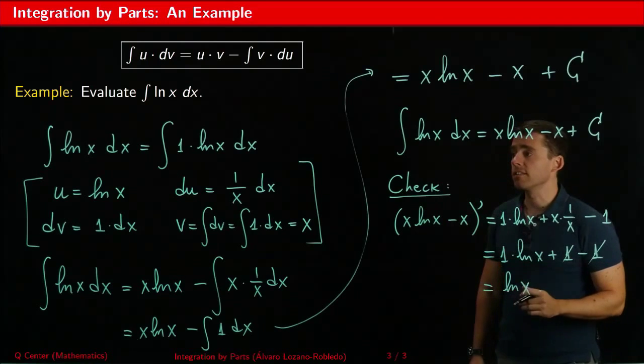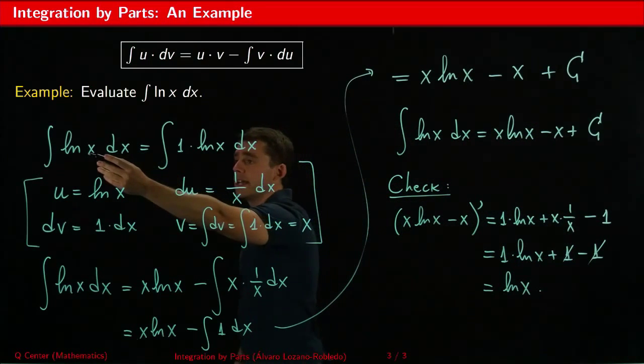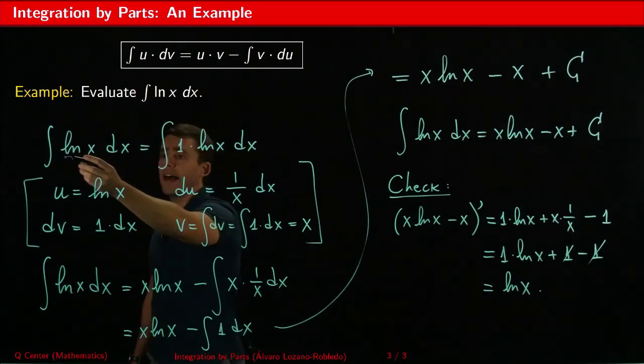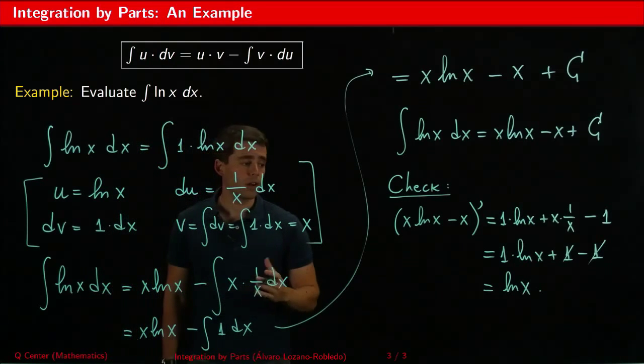So indeed that function x ln x minus x is an antiderivative of ln x. And again we've succeeded in using integration by parts for a function, for an integral that does not look immediately as a product of two functions. So it works in a variety of settings. Thank you.